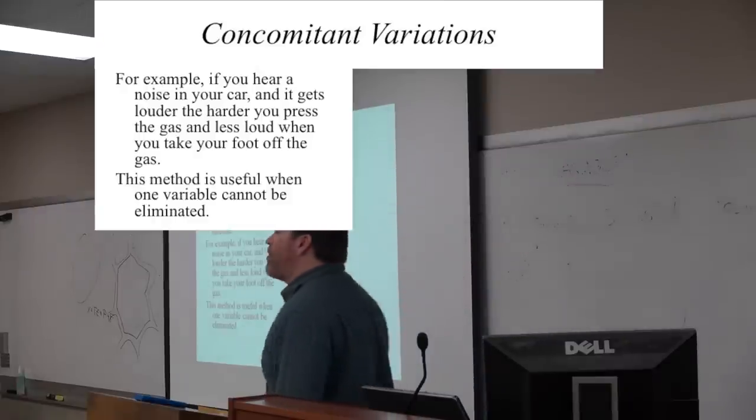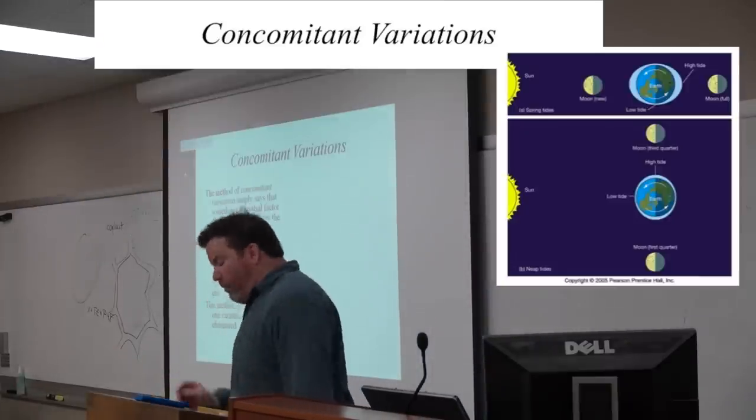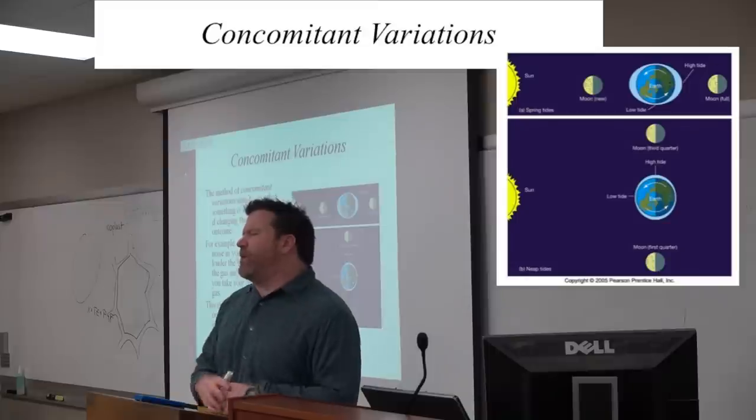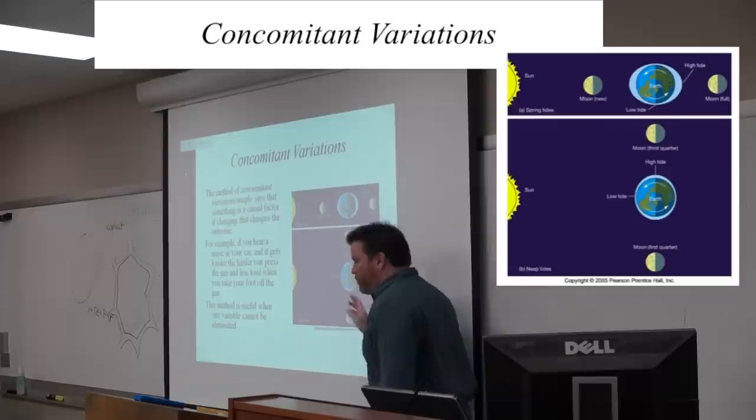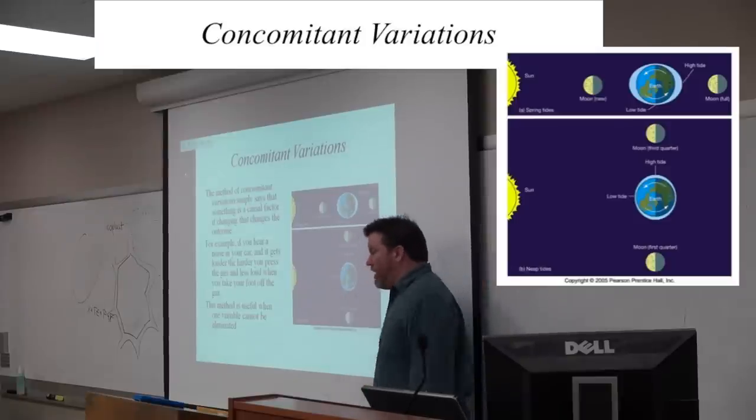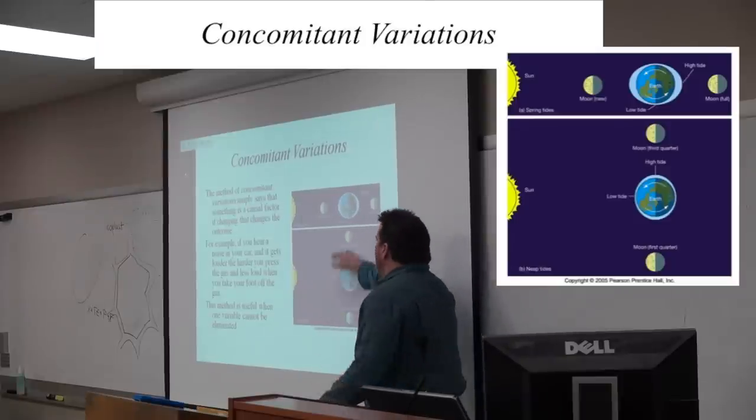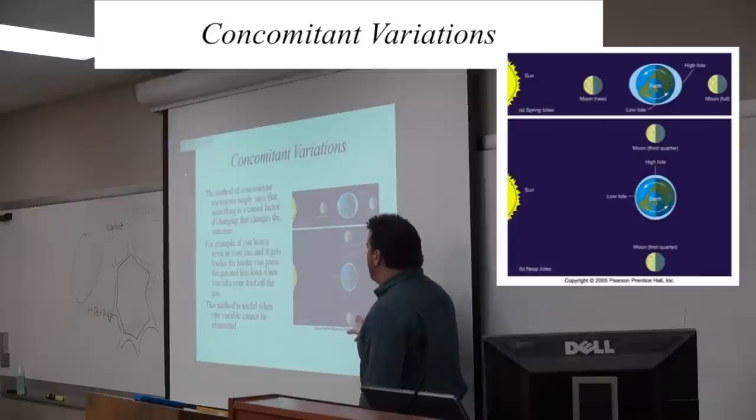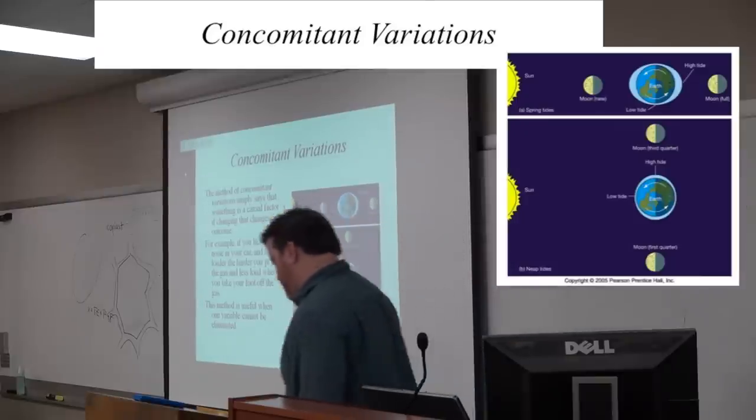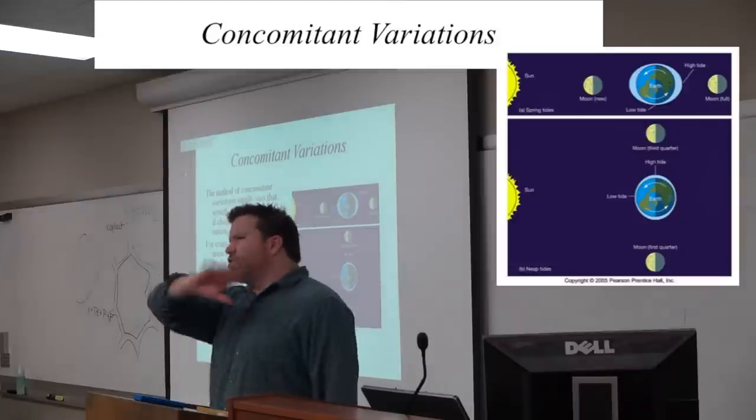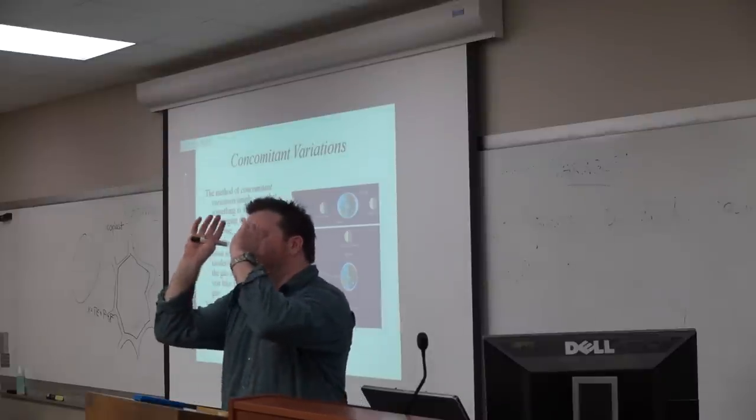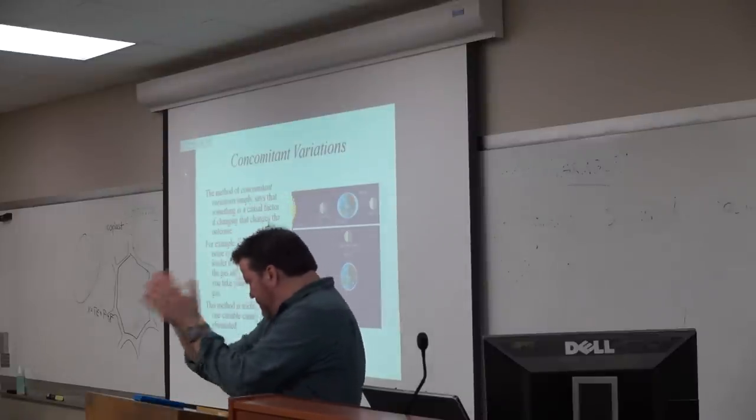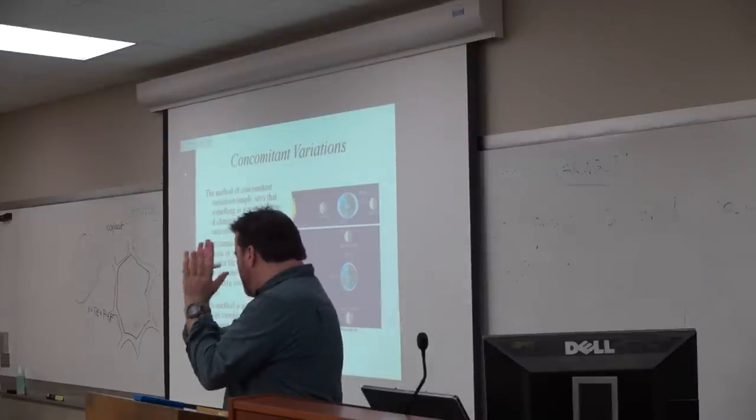This method is very, very useful if I can't eliminate a variable. Now, what are some situations where I can't eliminate a variable? Well, let's say I'm trying to figure out if the moon causes tides. I can't very well use the method of agreement or the method of difference because I can't get rid of the moon. I can't add a moon. What I can do is I can see whether or not the tides vary over the course of the position of the moon. So the first thing I can do is I can use naturally occurring agreements, disagreements, and concomitant variations.